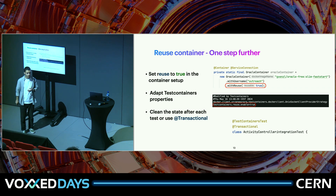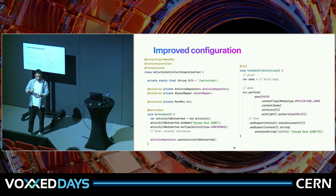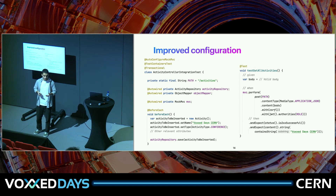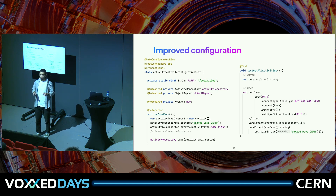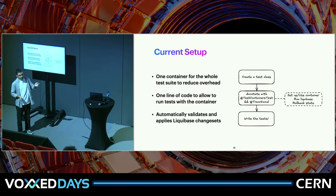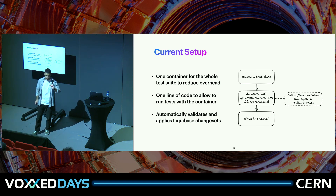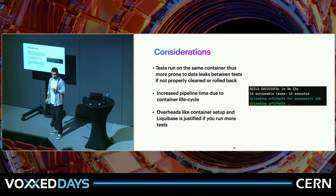Reusability comes at a price: database state can leak between test runs, especially since the container persists. To handle this, we advise cleaning state after each test or using @Transactional to automatically roll back. With just two annotations — our custom @IntegrationTest annotation and @Transactional — everything works plug-and-play. The container setup, Liquibase migration, and state rollback are all handled automatically; developers just write the tests.